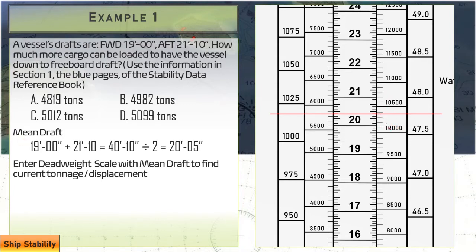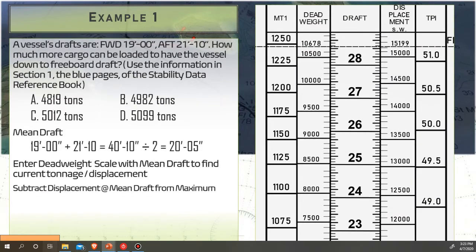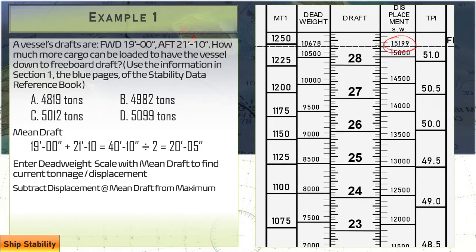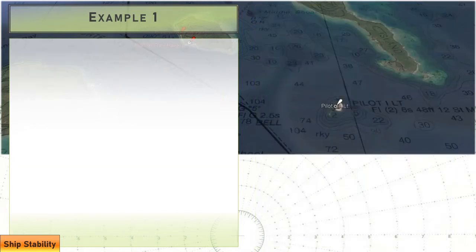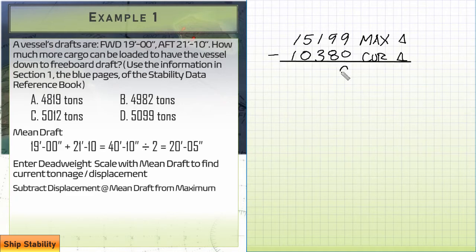We're going to then look at our displacement column and find the corresponding value. Now you're going to have to estimate a little bit. Each one of these hashes is worth 100 tons of cargo. So we've got 1, 2, 3, 4. So between 300 and 400, we're going to call it 10,380. So that value 10,380, we're going to subtract that from our maximum displacement. And the leftover amount is going to be the answer to our question. 15,199. That's our maximum displacement. And I'm going to use the delta for displacement. And we're going to subtract what we estimated our current level was based on our current midship draft or current mean draft. We're getting 10,380. That's our current displacement. Which gives us 4,819 tons. That's the amount that we have room for. And that'll bring us down to our freeboard draft.